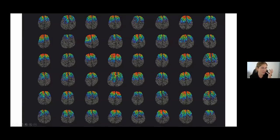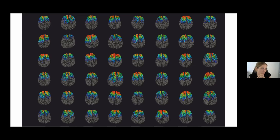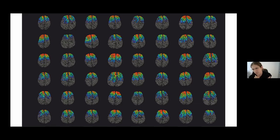It may seem trivial, but I think it is important to look at individual data. This helps to identify data quality issues but also to visualize how different brains and the distribution of current flow actually are. Looking at these images of clinical study participants may further convince us that in clinical neuroscience, adjustment for individual head and brain anatomy may be required, or at least may improve some kind of test effects.